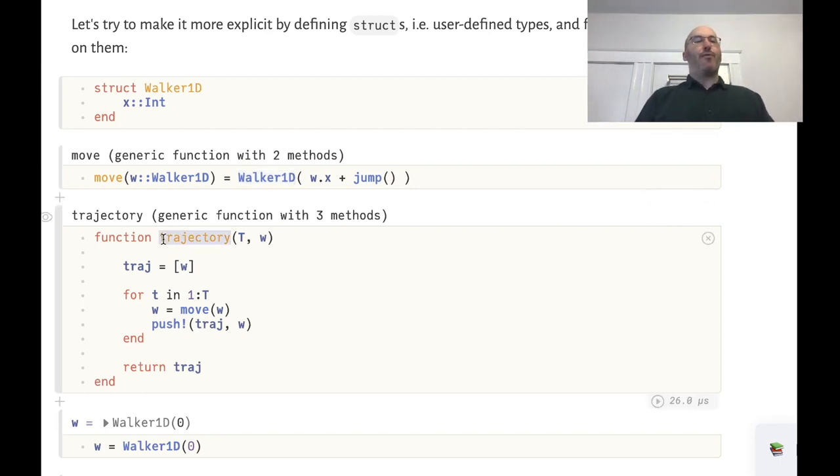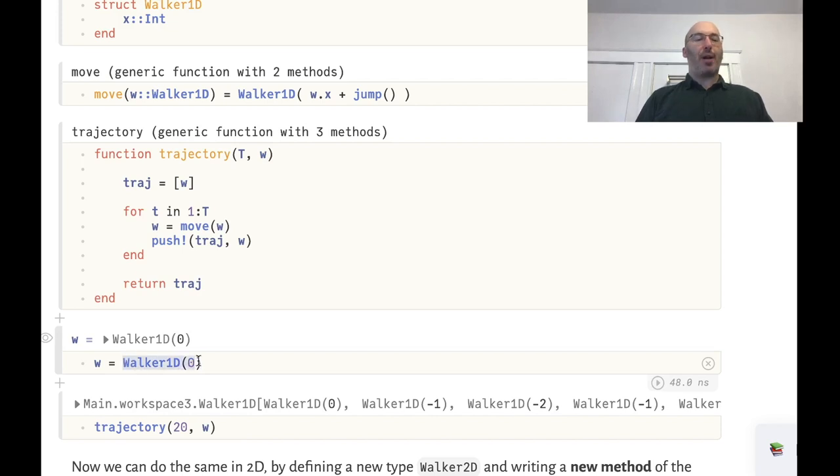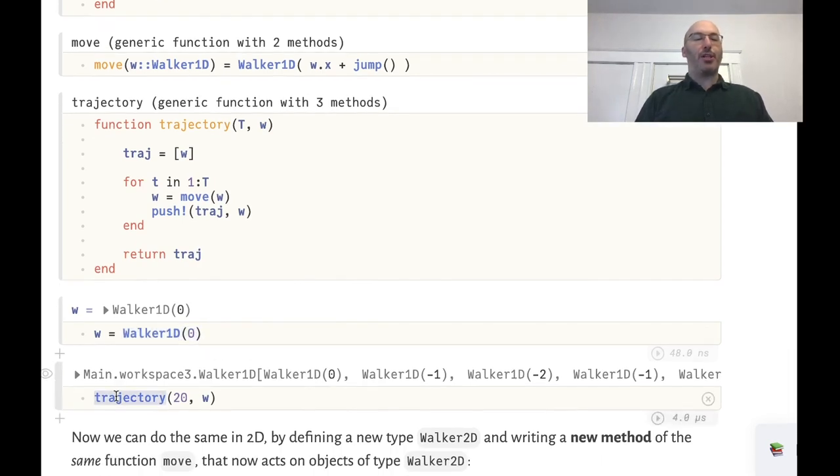And now I need a new version of the trajectory function which accepts this walker object. Everything is in terms of that walker object instead of explicitly the position. And so if I create a Walker1d object and then I call the new version of trajectory with that object w...